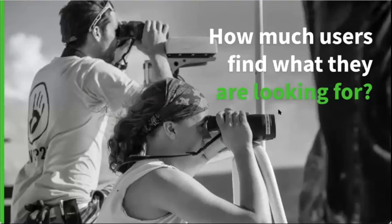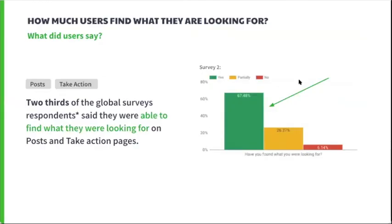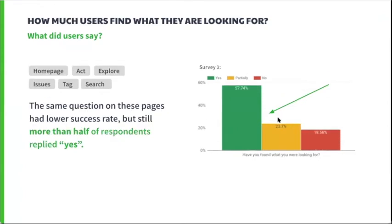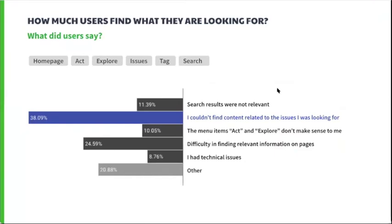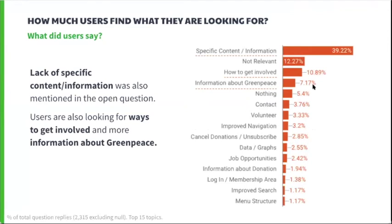Now we know who P4 users are, what they want, and how they navigate — so let's see if they can actually find what they are looking for. From the global surveys, two-thirds of respondents said they were able to find what they were looking for on post and take action pages. The same question asked on the home page, act, explore, issues, tags, and search pages showed lower success rates but still more than half replied yes. For users who didn't succeed, the main issues were not finding the right content and a lack of specific information. Users are also looking for ways to get involved and to find more about Greenpeace in general.